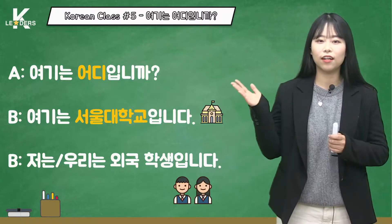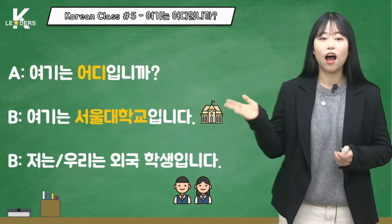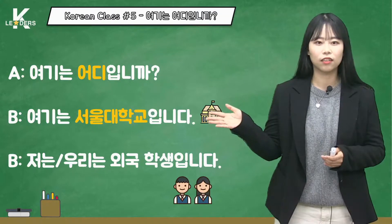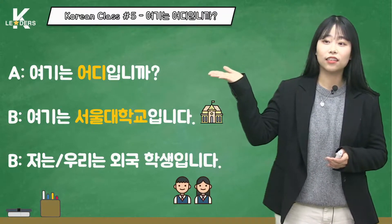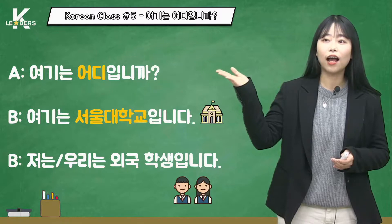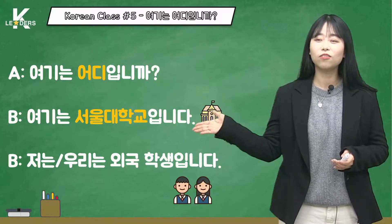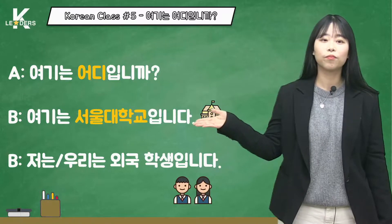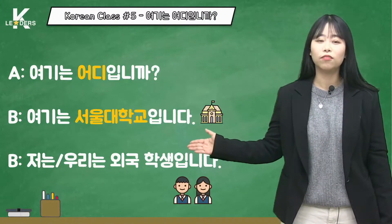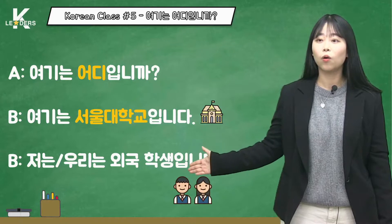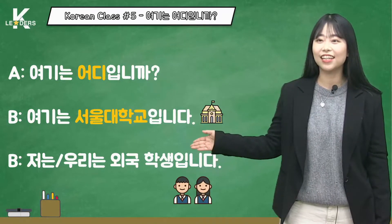The first thing we will learn today is these sentences. I will read them first. 여기는 어디입니까? — Where are we? 여기는 서울대학교입니다 — This is Seoul University. 저는 외국 학생입니다 — I am a foreign student. 우리는 외국 학생입니다 — We are foreign students.